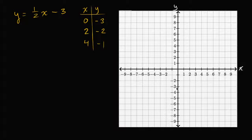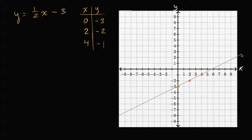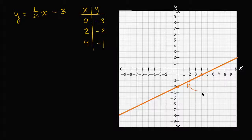The point zero comma negative three is on this line. Let me do this in a slightly darker color so we can see it on this white background. Zero comma negative three is on the line. Two comma negative two is on the line. And then we have four comma negative one — so when x is four, y is negative one. I could draw a line that connects all of these, and it would look something like that. This is literally the graph of y is equal to one half x minus three.